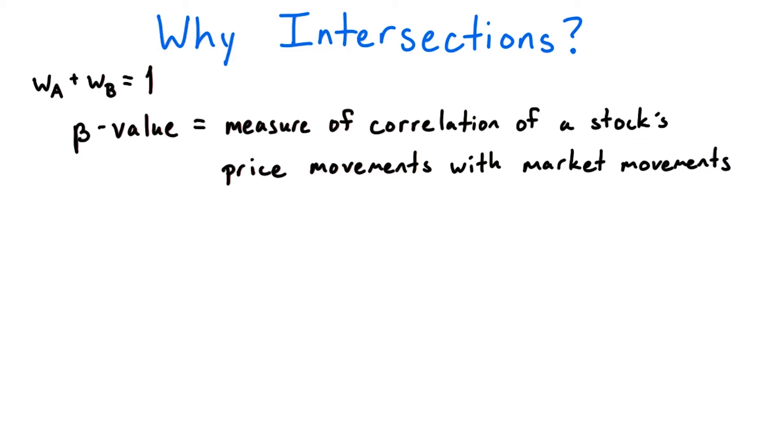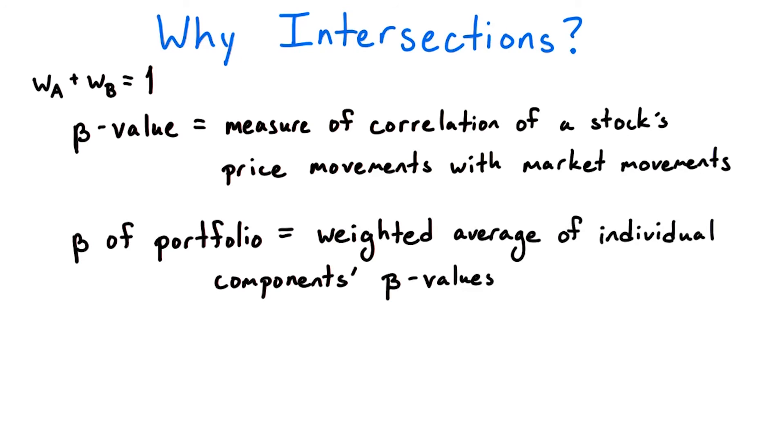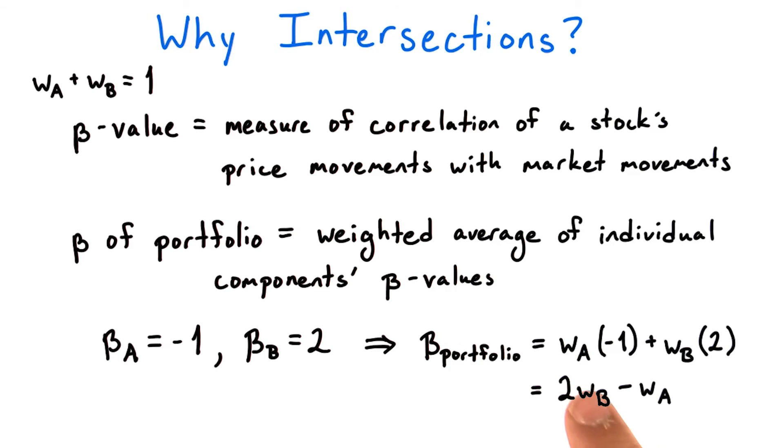Each stock also has an associated metric called its beta value, representing how correlated its price movements are with those of the overall stock market. The beta value of my portfolio is a weighted average of the beta values of its individual components. So if the beta value of A is -1 and the beta value of B is 2, then the beta value of my portfolio is W_A × (-1) + W_B × 2, or simplified, 2W_B - W_A.